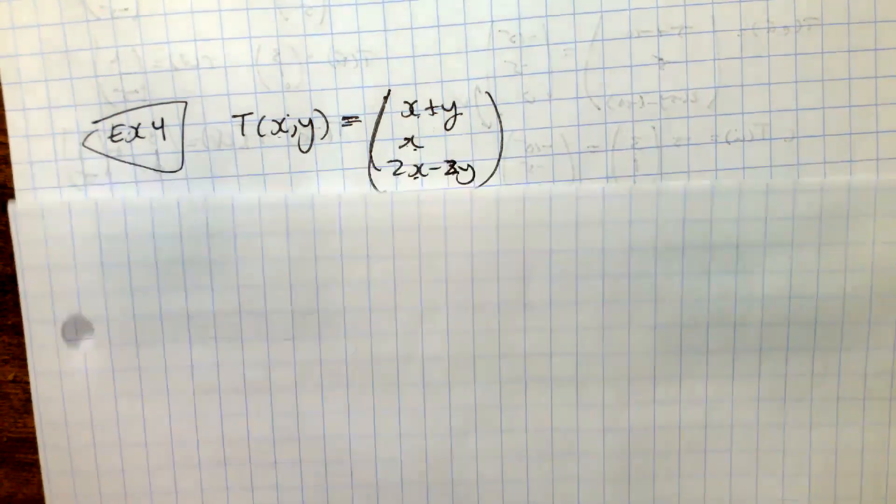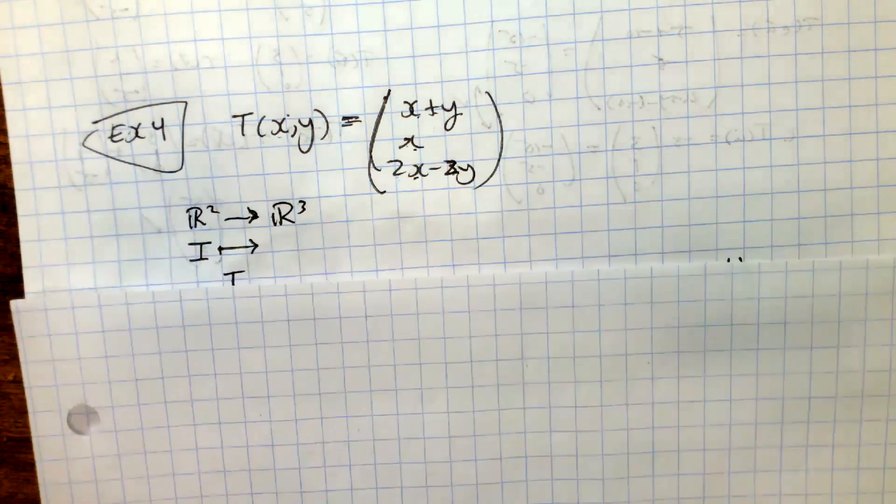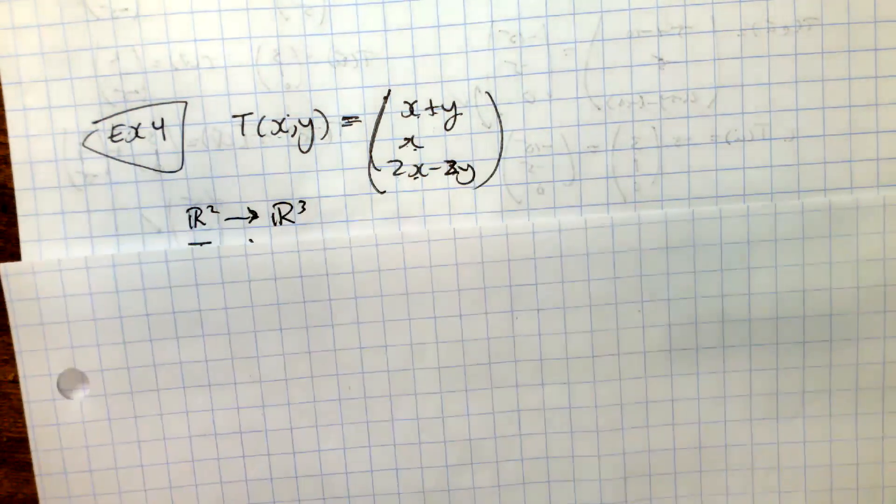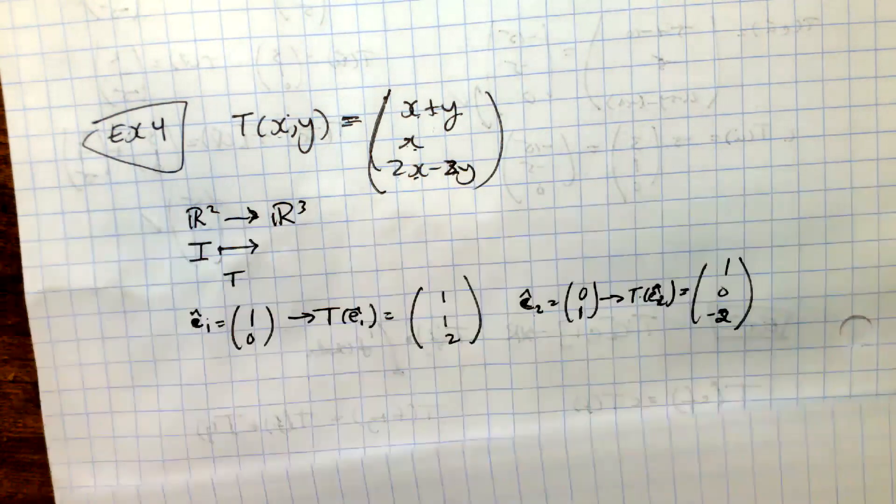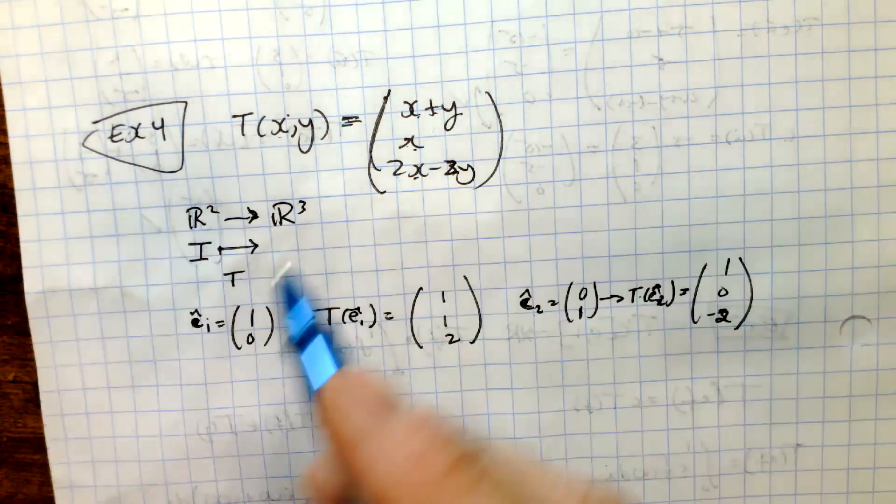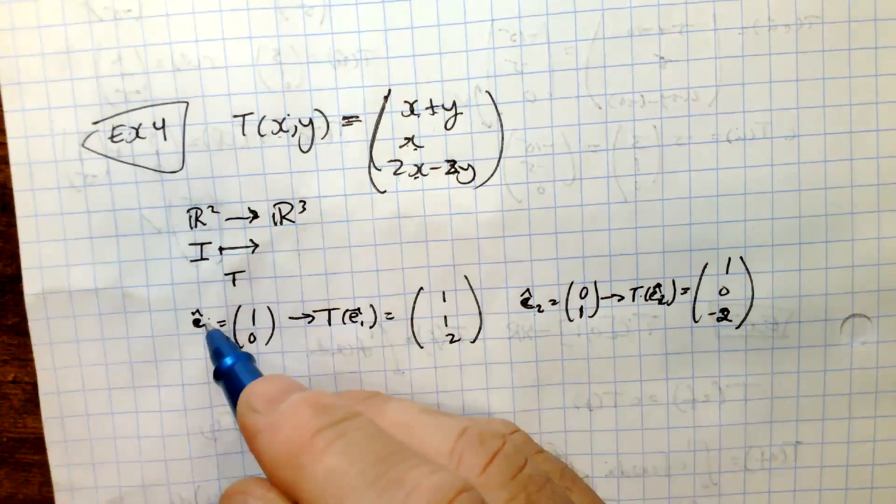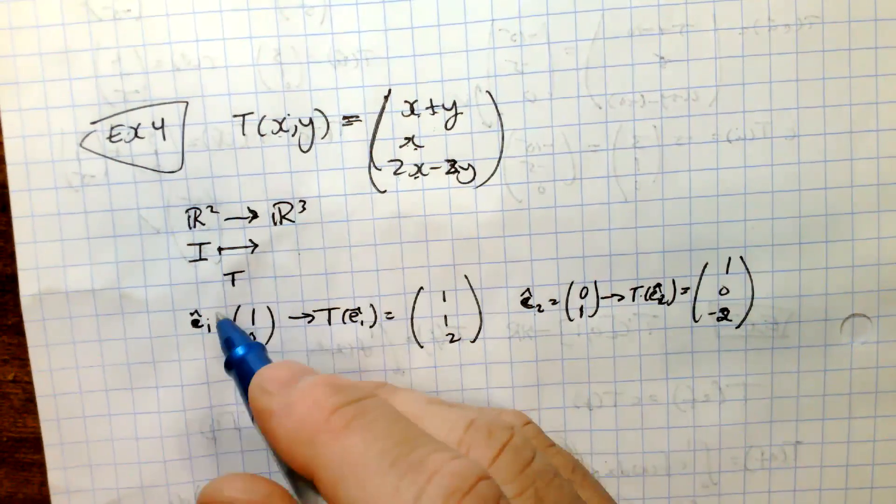So the fastest way or one way to find it is to take the map from R2, take the identity, whatever the domain is, and see how it maps into the domain. We're going to start with the identity matrix, use the transformation and see where those go.